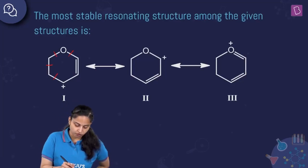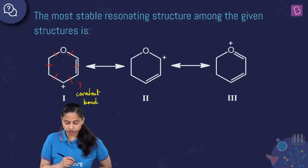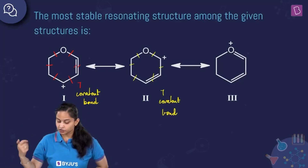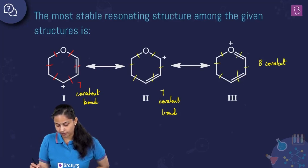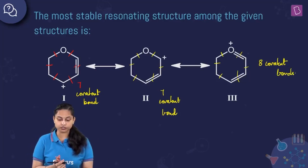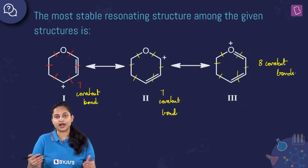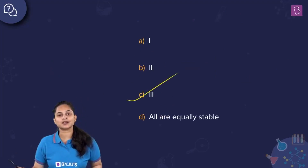The first resonating structure has 7 covalent bonds. The second resonating structure also has 7 covalent bonds. The third resonating structure has 8 covalent bonds. Since maximum covalent bonds means maximum stability (maximum atoms have their octet completed), the third resonating structure is the most stable. Option number C is the right answer.